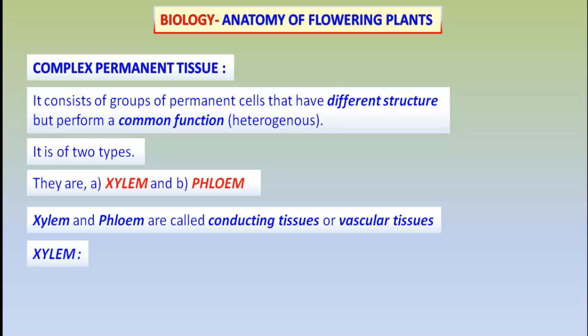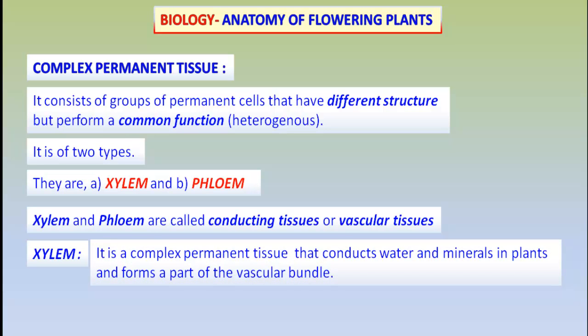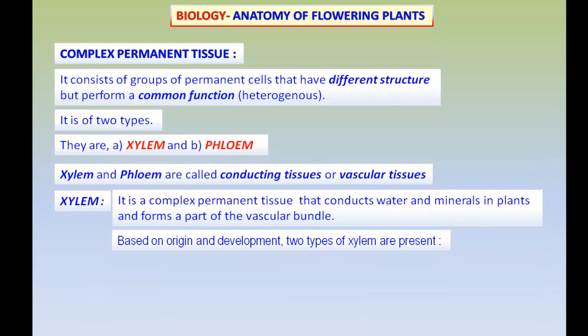The xylem, which is a Complex Permanent Tissue, is ideally suited for the conduction of water and minerals in plants, and forms a part of the vascular bundle. A vascular bundle is the bundle having both types of Conducting Tissues.